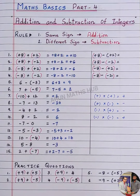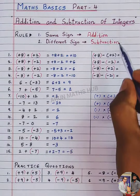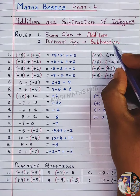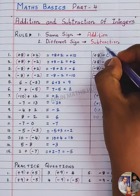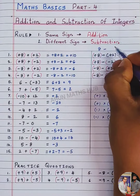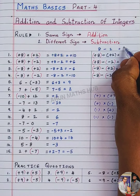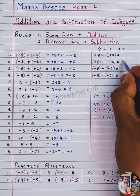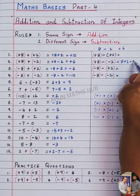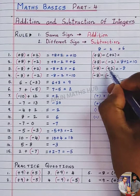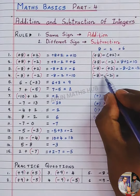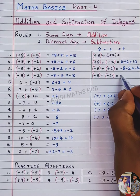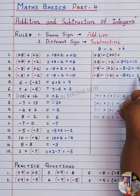Dear students, these are very important concepts. Try these practice questions. Minus into minus is plus: 8 plus 2 equals 10. Here, plus into minus is minus: 8 minus 2 equals 6. Here, minus 8, plus into minus is minus 2, so minus 8 minus 2 equals minus 12. Minus into minus is plus: minus 8 plus 2 equals minus 6.